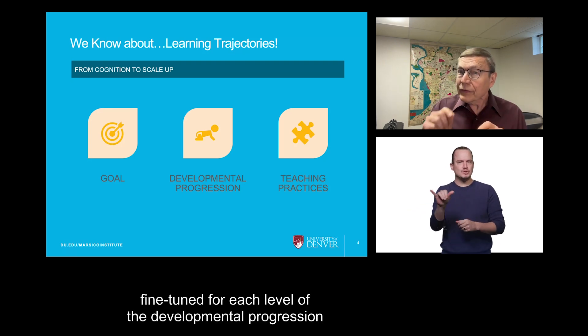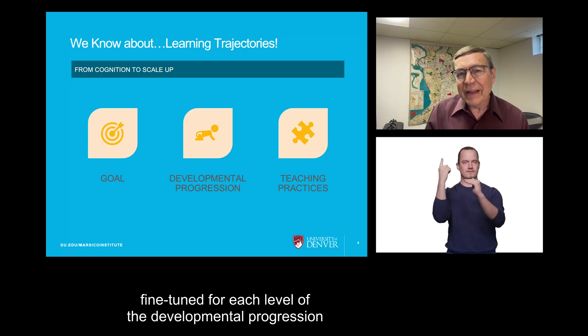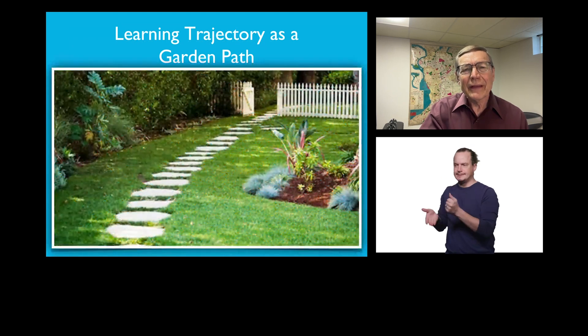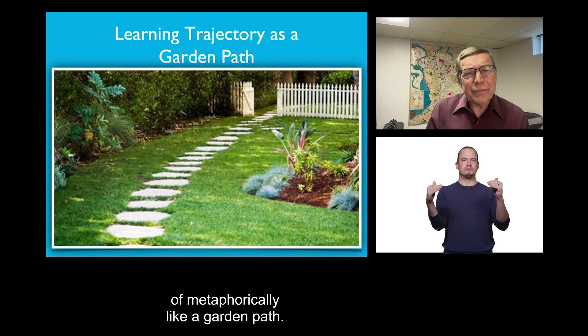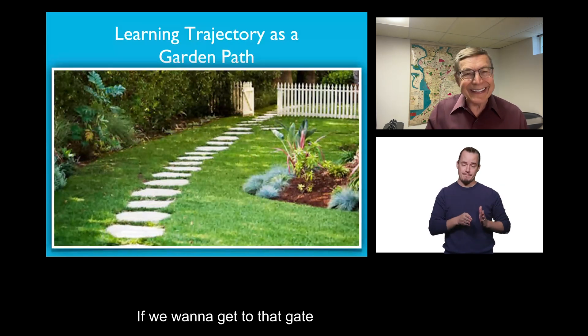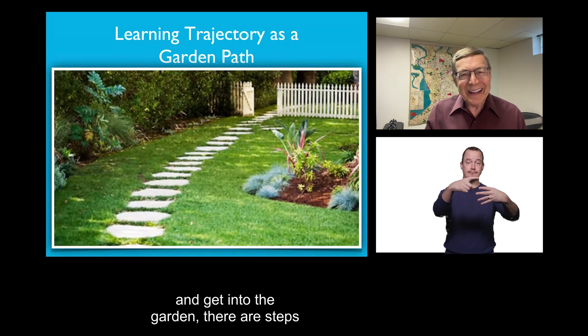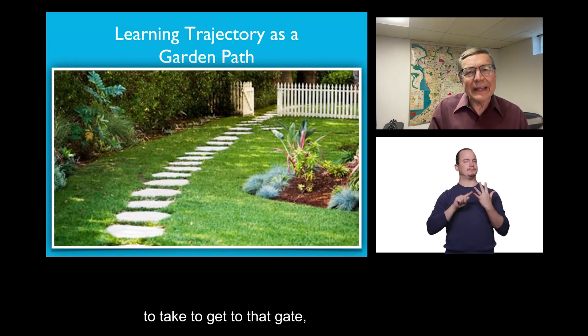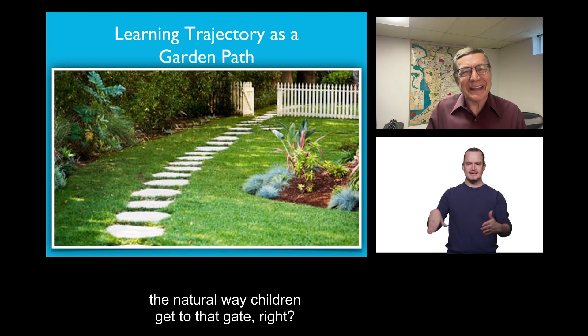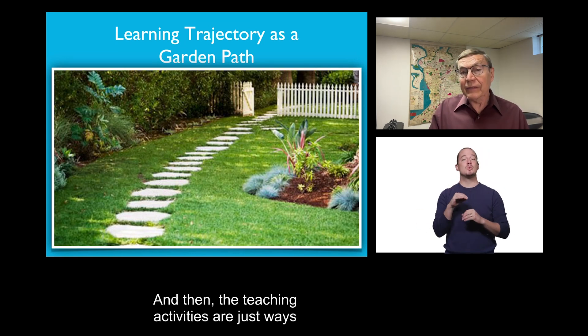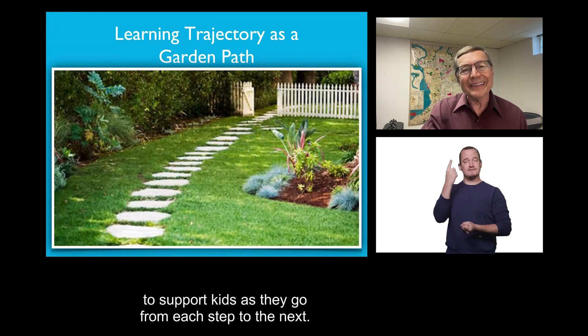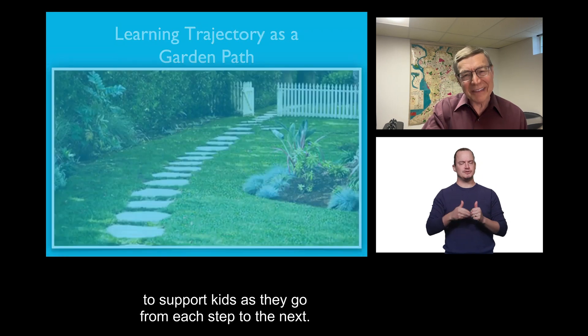Fine-tuned for each level of the developmental progression that help kids level up and get to the next level. In other words, a learning trajectory is kind of metaphorically like a garden path. If we want to get to that gate and get into the garden, there are steps to take to get to that gate. The natural way children get to that gate. And then the teaching activities are just ways to support kids as they go from each step to the next.